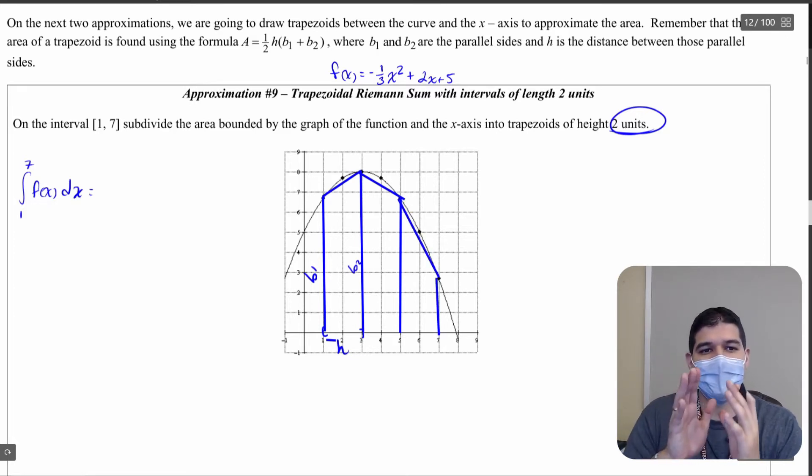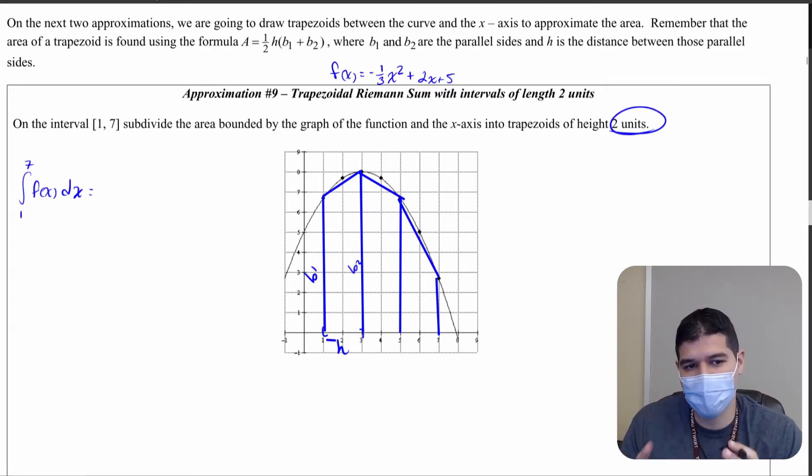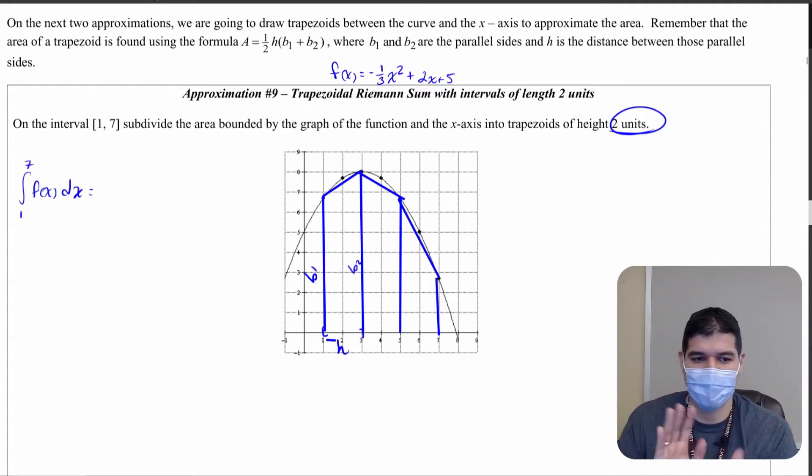So you do have the height. The height is going to be the length of the interval and you have base one and base two. What ends up always confusing students is the fact that it's height but it's going horizontally. Really, either just tilt your head or you can think about it as base times height one plus height two if that kind of helps you out.